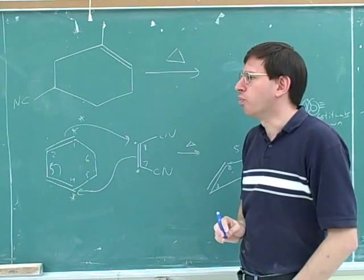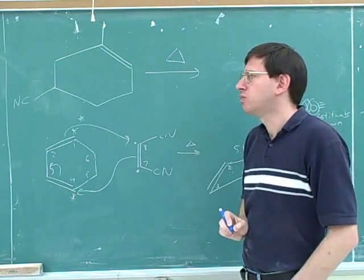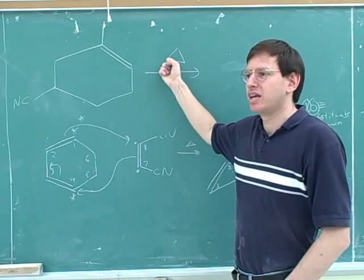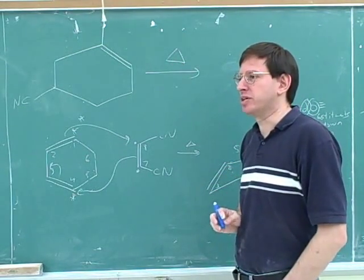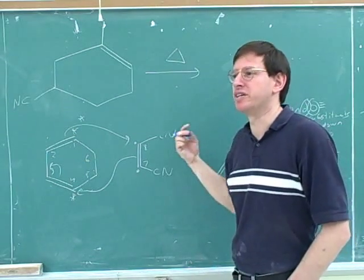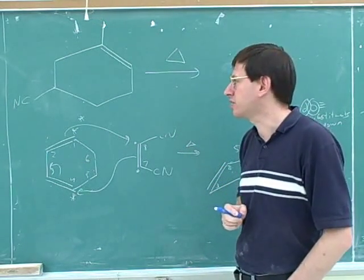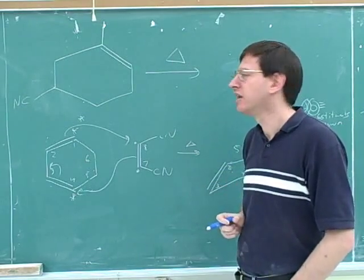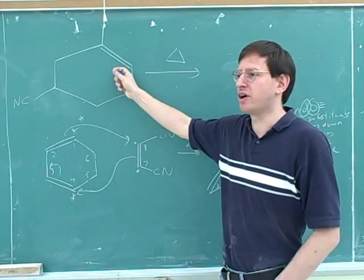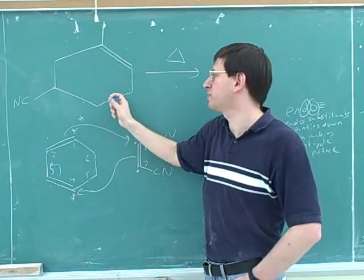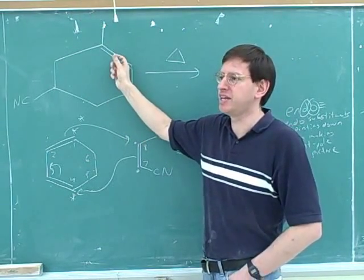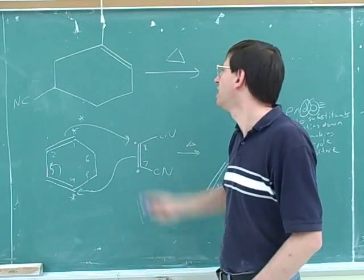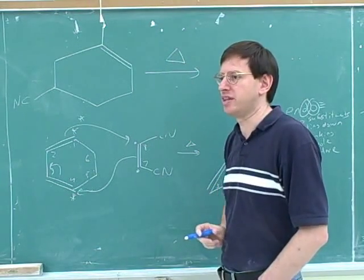What does it take to do a retro Diels-Alder? All it takes is heat, but you have to have a starting material that could have been made by a forward Diels-Alder. You need a starting material that could have been made from a forward Diels-Alder and you just add heat. Could this have been made from a forward Diels-Alder? Yes, because it's a six-membered carbon ring with a double bond. Any time you have a six-membered carbon ring with a double bond, you know that you can do a retro Diels-Alder on that.